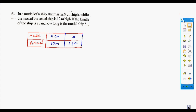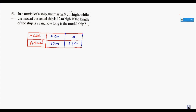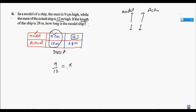Question 6: In a model of a ship, if 9 centimeters is the height in the model, in actual it is 12 meters. If more in model, more in actual — it is direct. The question is to find the actual length of the ship. In direct we divide: 9 divided by 12 equals x divided by 28. Cross multiplication gives the answer — this part I am leaving to you.